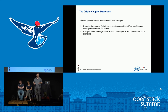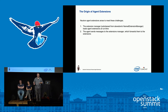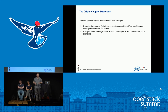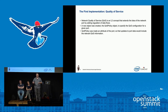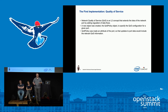The extension manager is a new class subclassed from Stevedore's named extension manager — a pattern proven to work well with neutron plugins and ML2 mechanism drivers. The agent sends messages to the extension manager, which then forwards them to all extensions. The first implementation was in quality of service, which is an L2 concept that extends the idea of the network port by adding regulation of data flows.